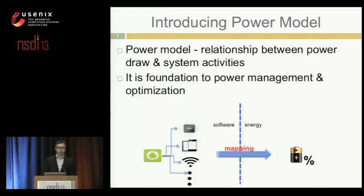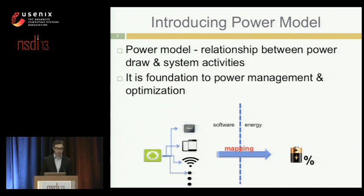Smartphones are very popular network devices introducing a lot of network traffic. Compared with other devices, there's an interesting feature limitation. One is power — power is the constraint that limits the development of smartphones. So to improve energy efficiency, we need a power model.